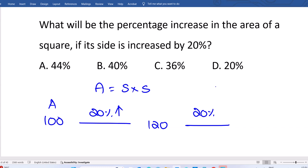Area is side into side. For 120, 10% is 12, 20% means 24. We got 144. Now area becomes 144.